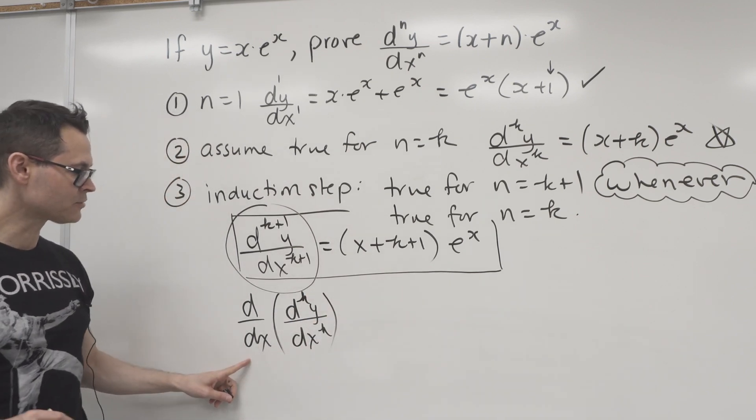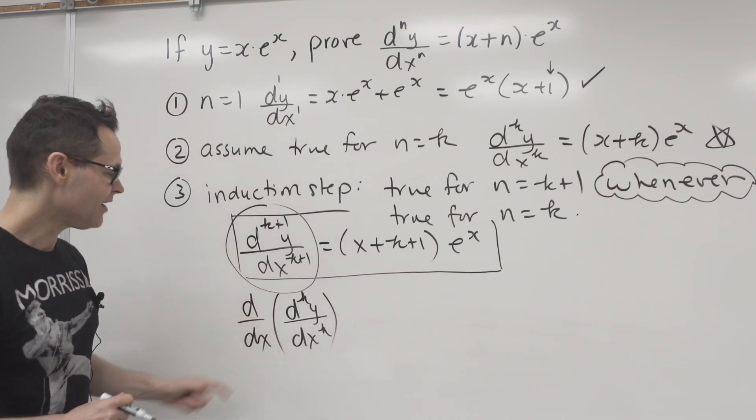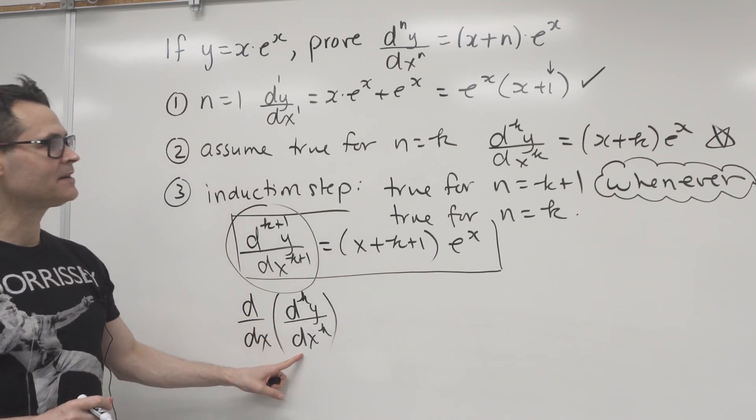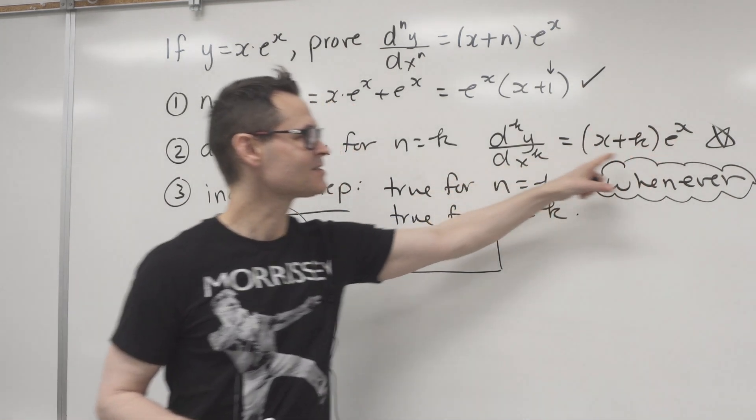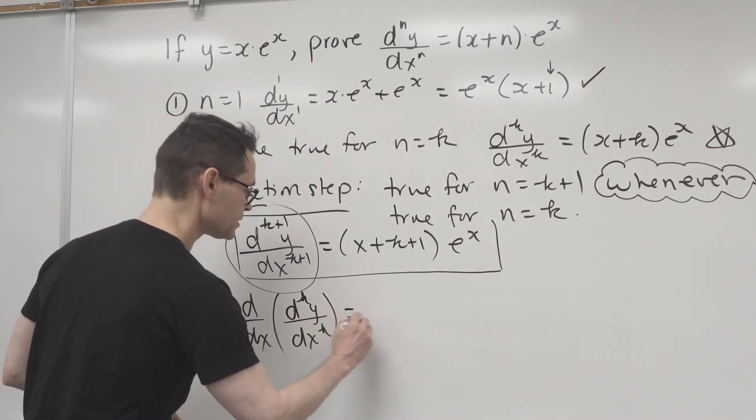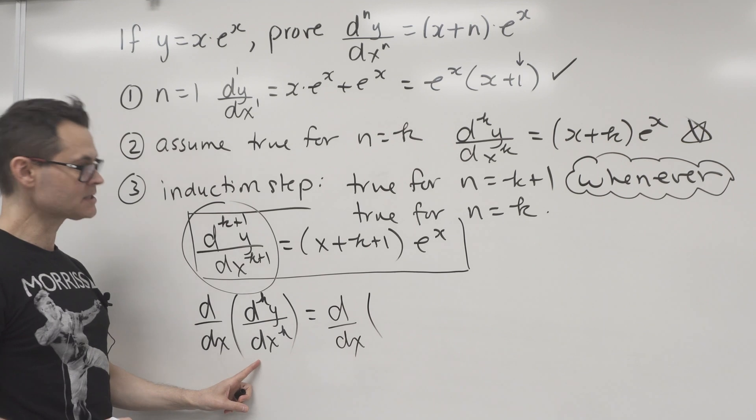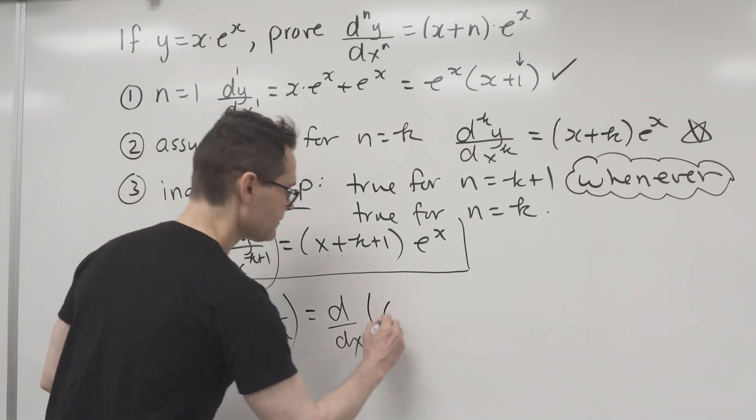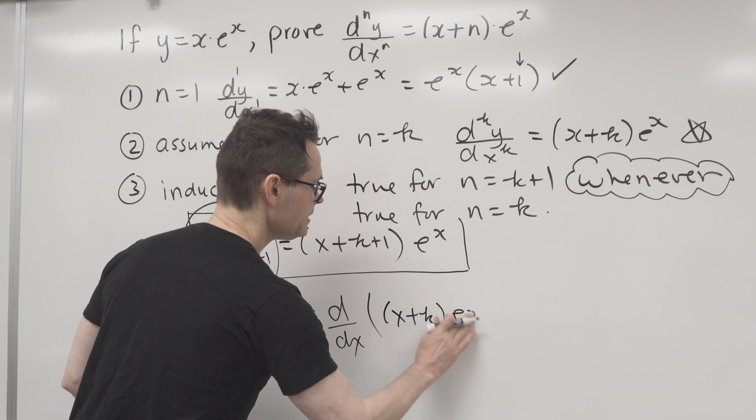If I take the derivative of the k-th derivative, I get the k plus 1th derivative, right? Now, look at this. The k-th derivative is actually equal to this, right, by assumption. And this is a great place to incorporate it into the induction step. So I'm going to say d by dx of, I'm going to substitute that in. So I've got my x plus k times e to the x.